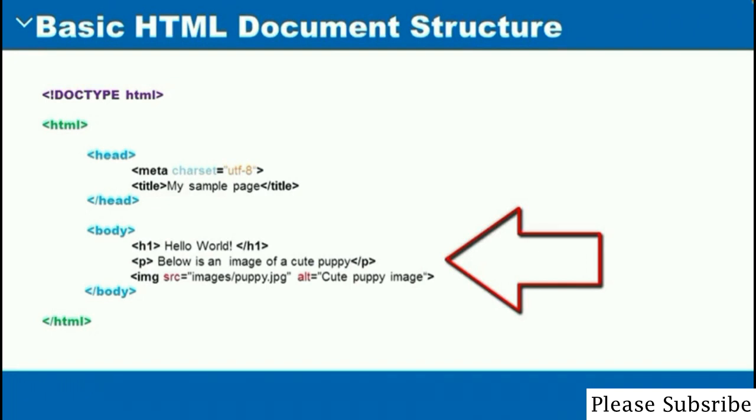Next, I've got another attribute called alt. This is called the alternate text. You have to give it a value. I've given it a value of cute puppy image. Basically, what that does, if for any reason the image that is meant to be on this page does not get displayed, the alternate text will display the text instead.